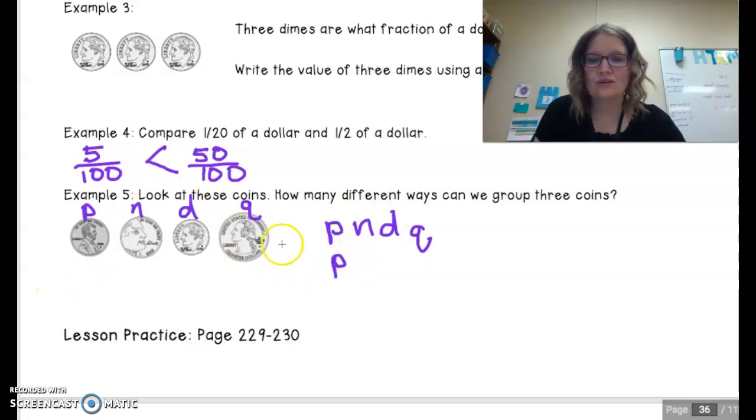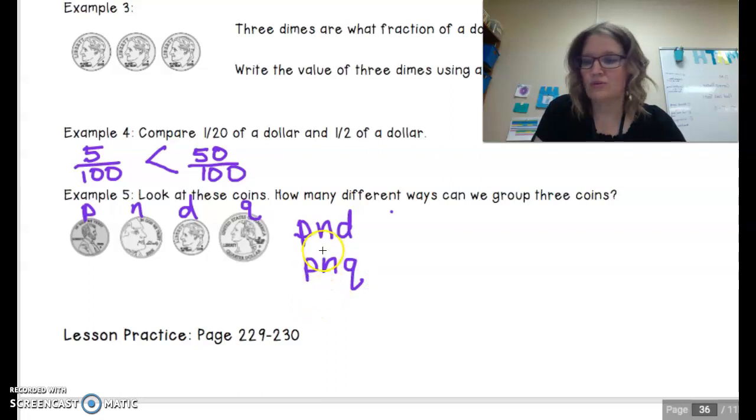So how can we group three coins? We can say penny, nickel, dime; penny, nickel, quarter. Is there anything else that we can do? We can also say penny, dime, and quarter.